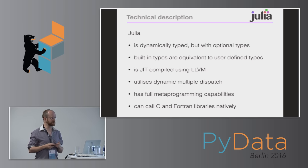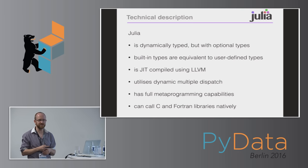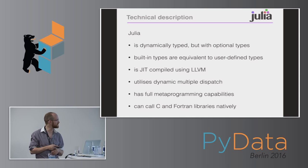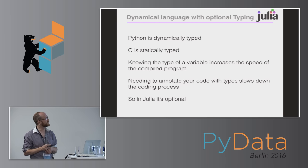So how is Julia a solution to all of this? In technical terms, it's a dynamically typed language like Python, but with optional types. It has built-in types that are equivalent to user-defined types. It's just-in-time compiled using the LLVM suite. It utilizes something the developers coined as dynamic multiple dispatch — and this is where most of the speed comes from. It has full native programming capabilities, and you can call C and Fortran libraries natively, which is very important for numerical computing.